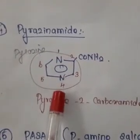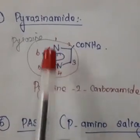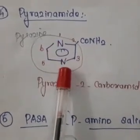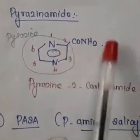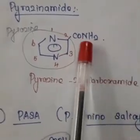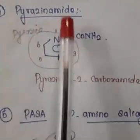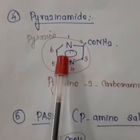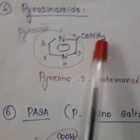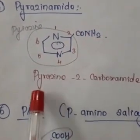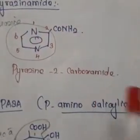Pyrazine means a six-membered ring with two nitrogens at positions one and four, with an amide group at the second position. An amide is -CONH2, also called carboxamide. So pyrazinamide means a pyrazine nucleus with an amide at the second position. The chemical name is pyrazine-2-carboxamide.